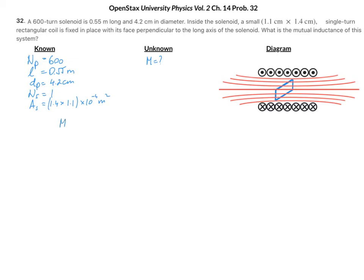If we use the mutual inductance equation, which says that mutual inductance is the number of turns in the secondary times the flux through the secondary divided by the current in the primary, then we have the number of turns of the secondary, which is 1, times the magnetic flux — that is the magnetic field going through the secondary times the area of the secondary — divided by the current in the primary. The magnetic field is not created by the secondary; it is created by the primary, by the solenoid. So I'm going to replace the subscript secondary with primary, and the area is going to be the area of the secondary, because the secondary is completely immersed inside the solenoid in the magnetic field.